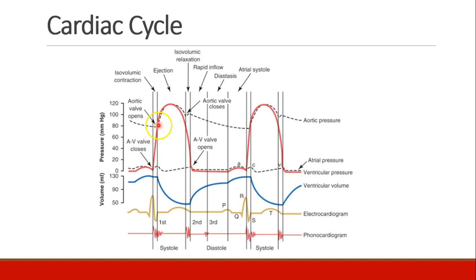When the aortic valve opens, pressures continue to rise as blood is ejected from the ventricle into the aorta. Then as the ventricle empties, pressure begins to fall and continues to fall until the aortic valve closes. At that point, blood is trapped past the aortic valve in the aorta and those pressures remain relatively high. But ventricular pressure continues to fall as the heart chamber relaxes, until finally the AV valve opens and blood can flow in from the atrium. At this point, we are in diastole where the ventricle is filling. We also see a little bit of atrial systole giving some filling to the ventricle, and then the process begins again.